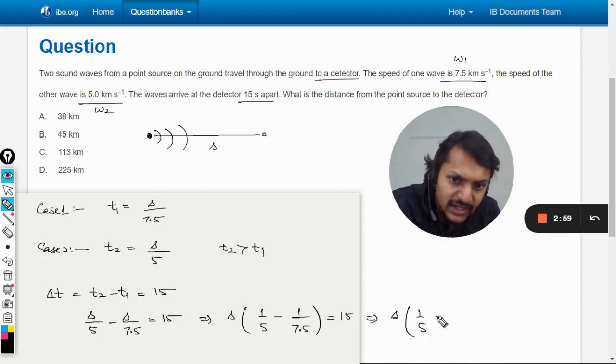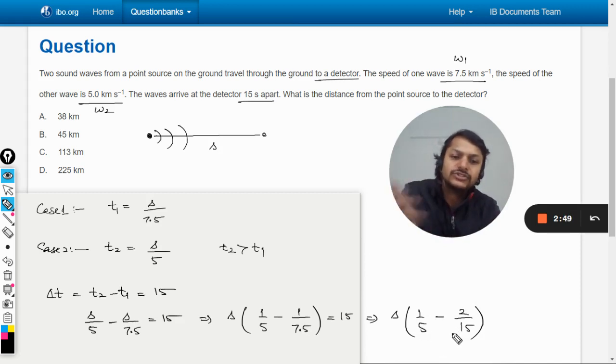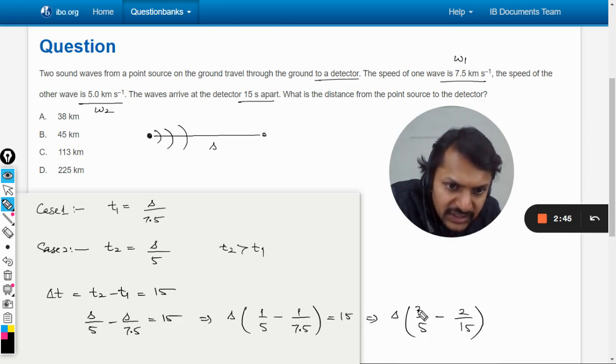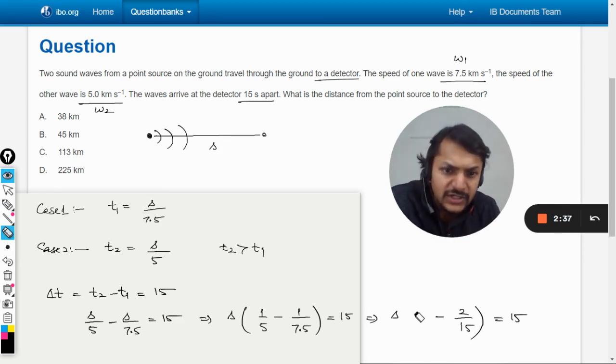In my method, I prefer to remove the decimal. 7.5 can be taken as 15/2. Then to make the denominators the same, we multiply by 3 here and 5 becomes 15. Don't get confused.